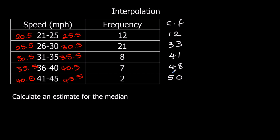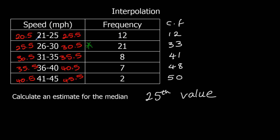We're looking for the median. Because we've got a total of 50 or above, we can just halve it, so we're looking for the 25th value. We need to identify what group the 25th value is in. We've got 12 in the first group, and then the second group goes up to 33, so it must be somewhere in the second group, between 25.5 and 30.5. We're starting at 12 and need to get to 25, so we're going 13 into this group.